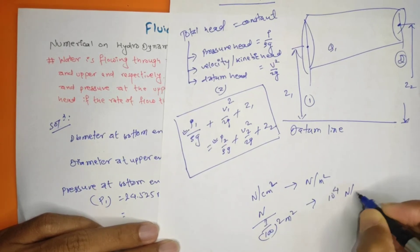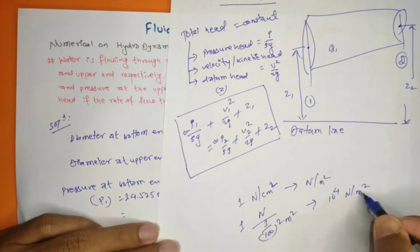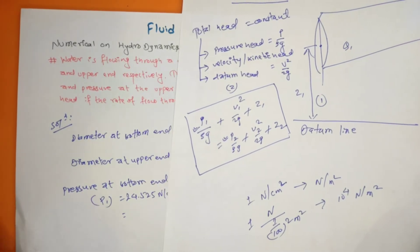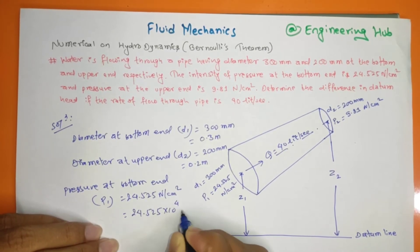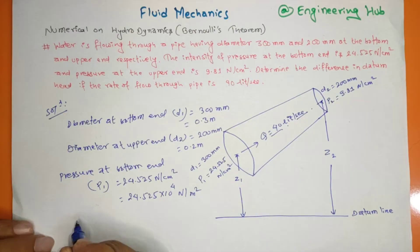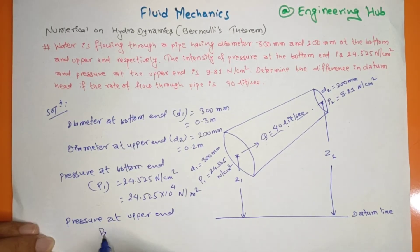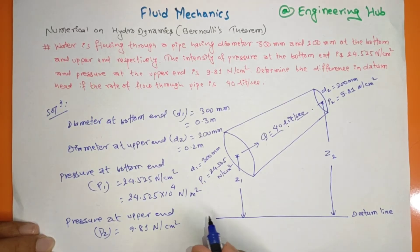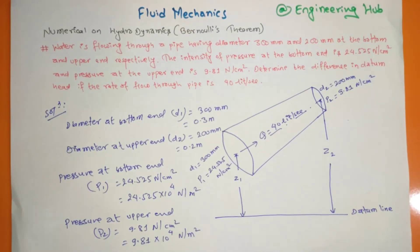The pressure at the bottom end P1 is 24.525 × 10⁴ N per m². The pressure at the upper end P2 is 9.81 N per cm², which equals 9.81 × 10⁴ N per m².